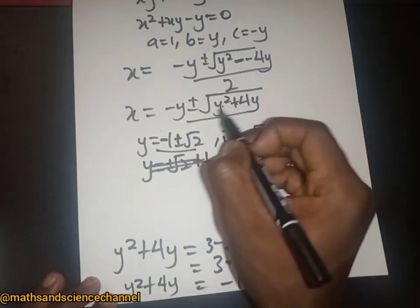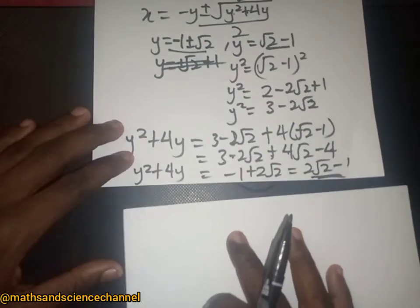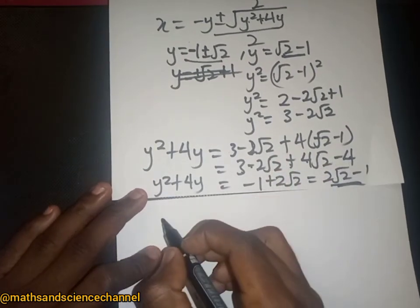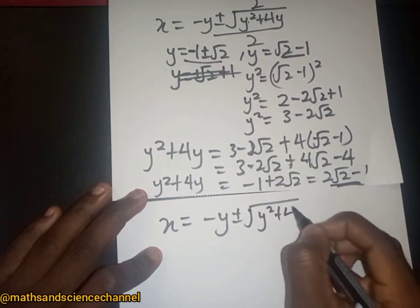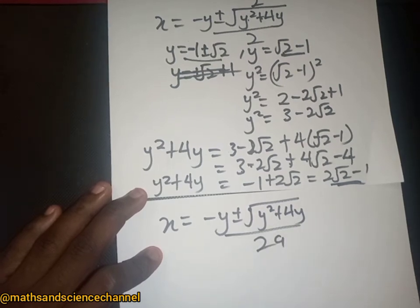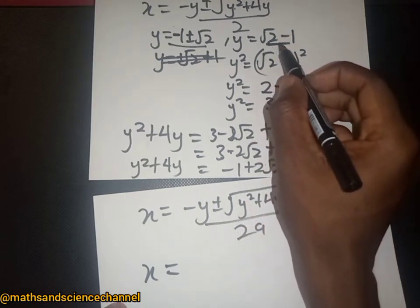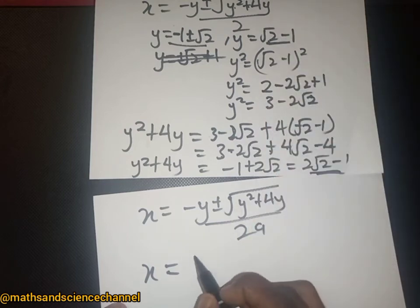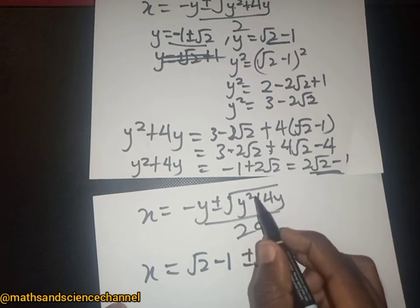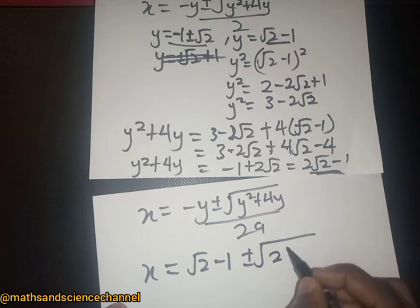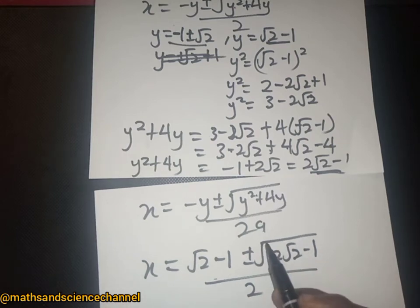Placing this value into our formula for x, we have x equal to y plus or minus square root of (y squared plus 4y), divided by 2. Replacing: y is root 2 minus 1 and y squared plus 4y is 2·root 2 minus 1, all divided by 2.